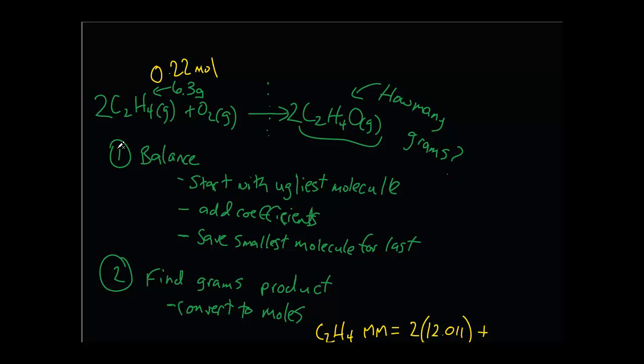Now, the coefficient comes into play because we now see we have a 2 to 1, actually a 2 to 2 ratio in terms of moles of C2H4 and C2H4O. In other words, they're equivalent. So if we have a 2 to 2 ratio, which is 1 to 1, of C2H4 to C2H4O, that means we also have 0.22 moles.